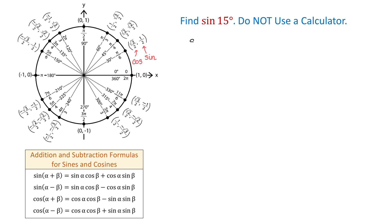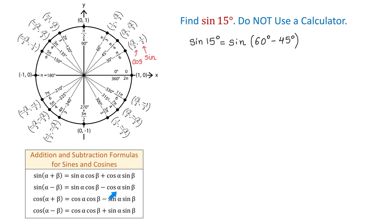So now we can write sine of 15 degrees as sine of 60 degrees minus 45 degrees. Now we have sine of a difference of two angles. From here, we will use the formula: sine of alpha minus beta equals sine of alpha cosine of beta minus cosine of alpha sine of beta.